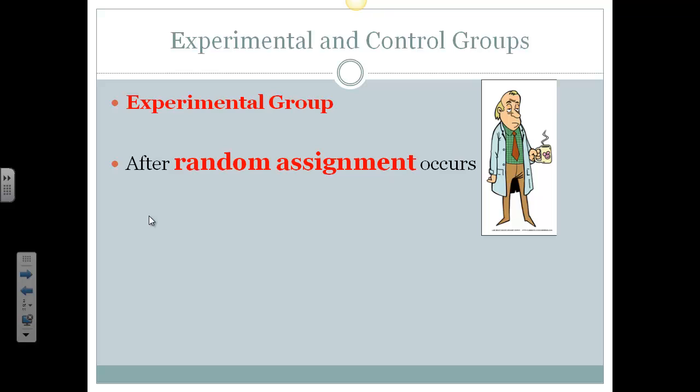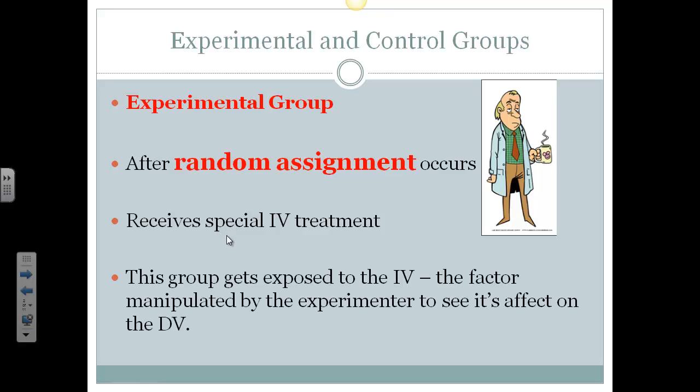And by doing so, we're going to even out some of the extraneous variables that could affect our dependent variable, and we want to make sure that we have more control over some of those variables and more validity in our experiment. So after random assignment occurs, the experimental group receives the special treatment that we think matters, and in this case it's the independent variable. This way, this group gets exposed to this factor in order to see how it affects the DV.